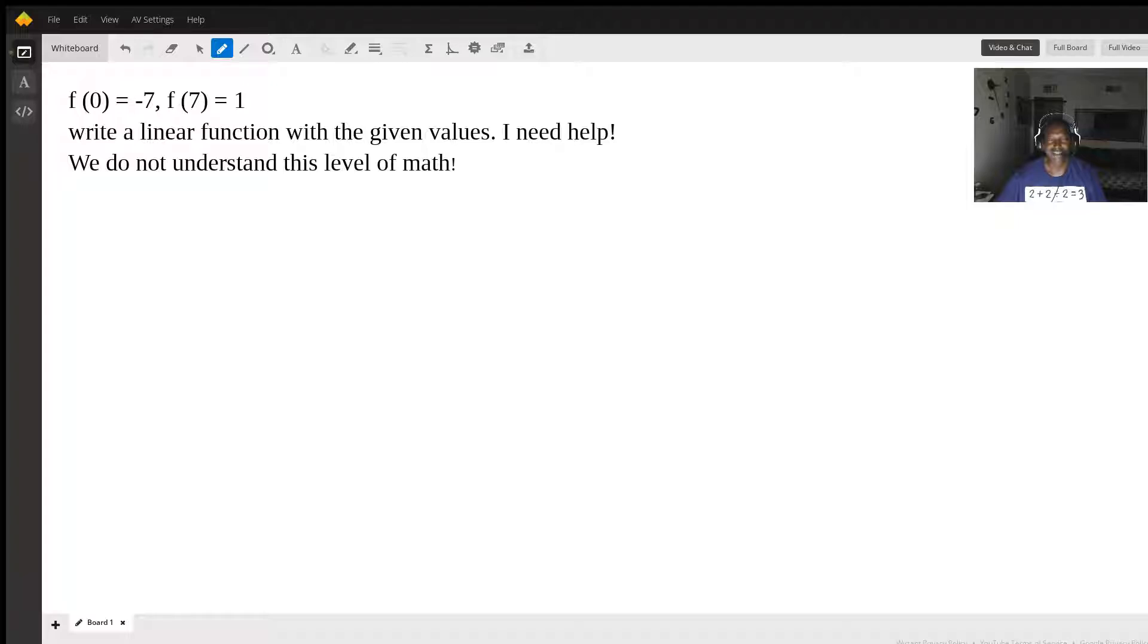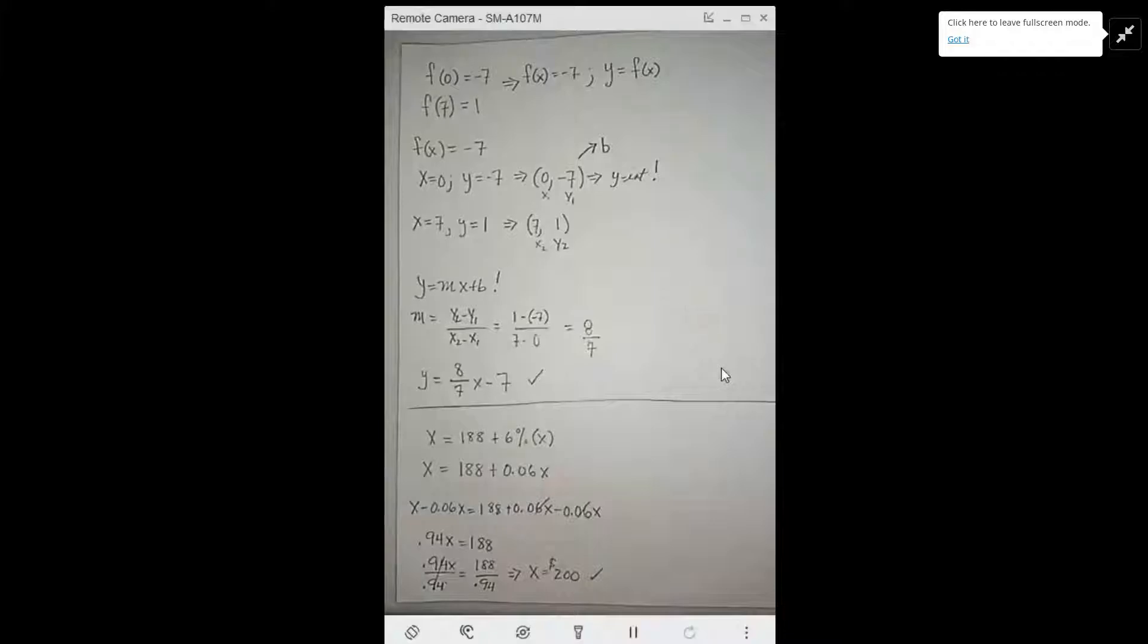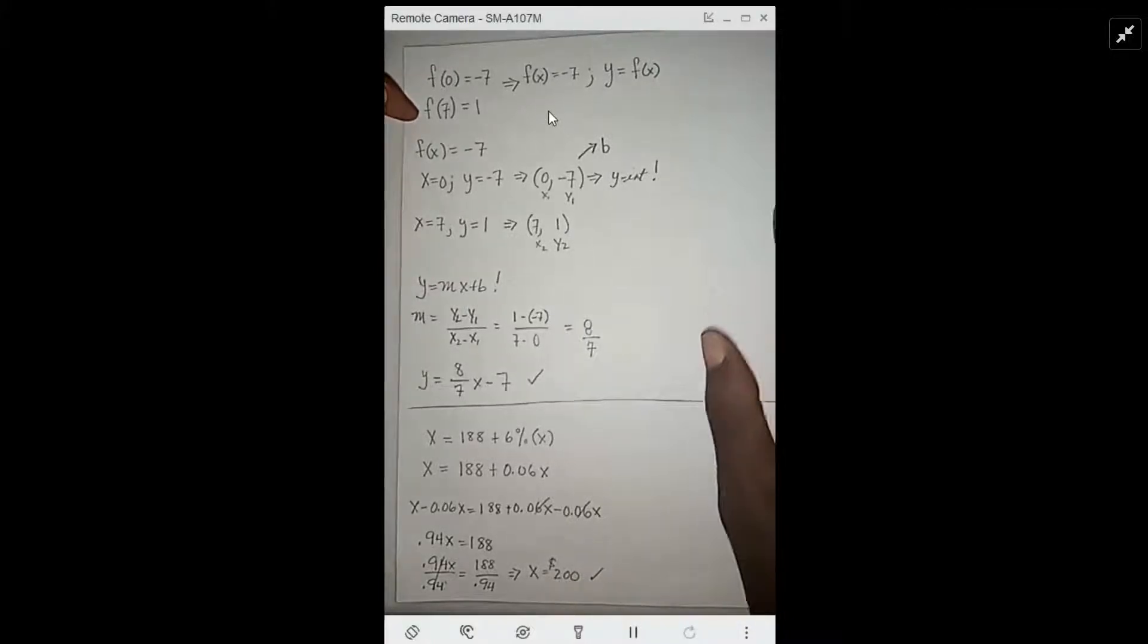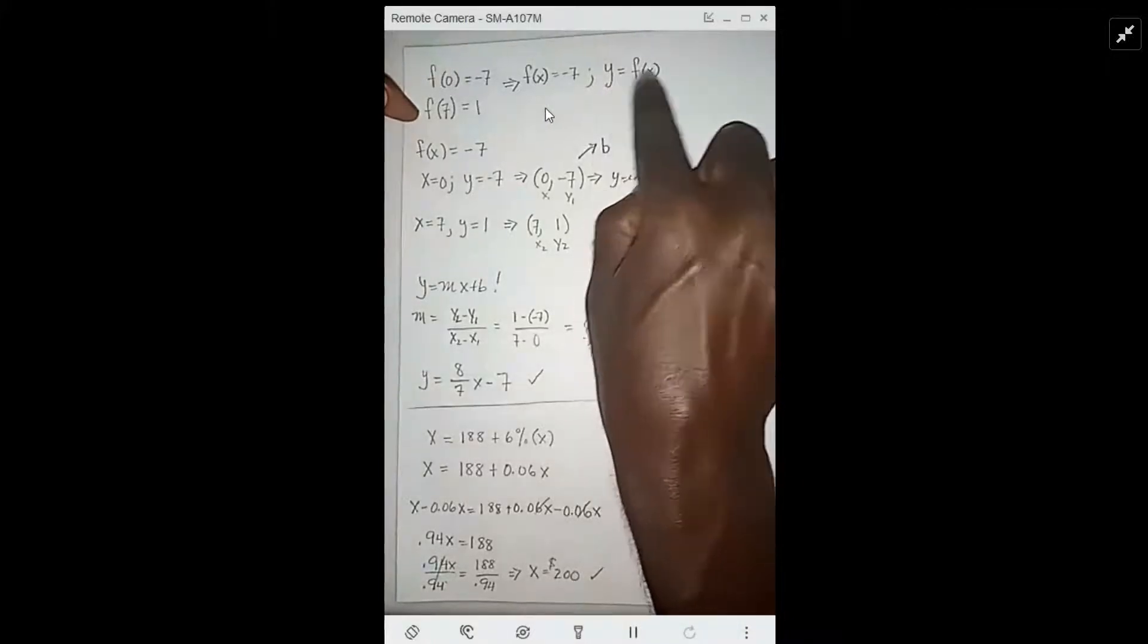I know how you feel. We're going to get to the bottom of this. So f(0) = -7, f(7) = 1. You know y equals f(x). That means when x is equal to 0, f(x) equals -7.